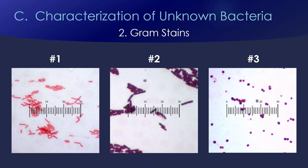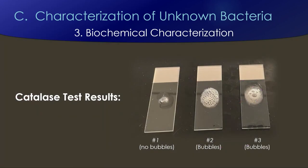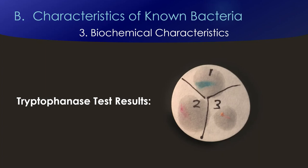Now that we've looked at the colonies, we can look at the Gram stains, which can be quite revealing. You can see we have both Gram negative and Gram positive unknown organisms, and we have both bacilli and cocci, so this hopefully gives you some pretty good information to help narrow down what you think these unknown bacteria are. Here are the results of the catalase test: number one had no bubbles, while number two and three had bubbles. Here are the tryptophanase test results: number one has turned blue — a positive tryptophanase test — and number two and three did not turn blue.